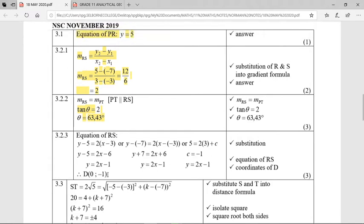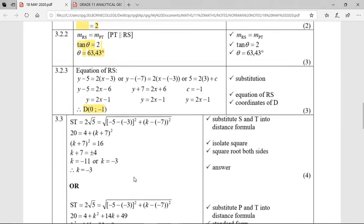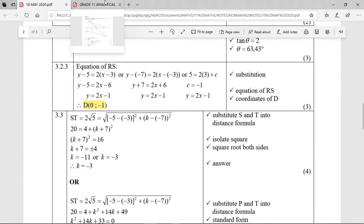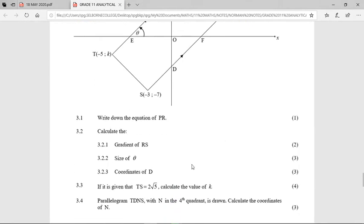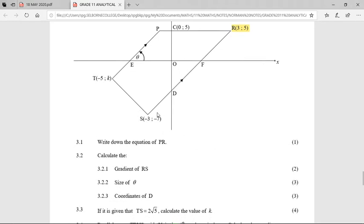But be very careful. How have they asked for the answer? They asked for the coordinates of D. So you could not just say D equals negative 1. You have to say D is 0 and negative 1. It's a coordinate. So 3.2.3 is done. Moving to 3.3, if it is given that TS is 2 root 5, calculate the value of k.